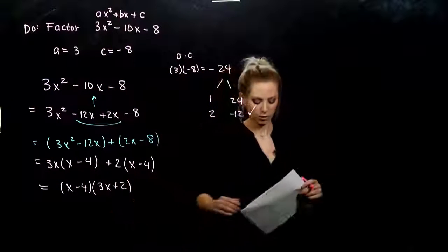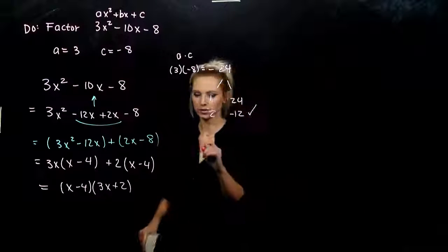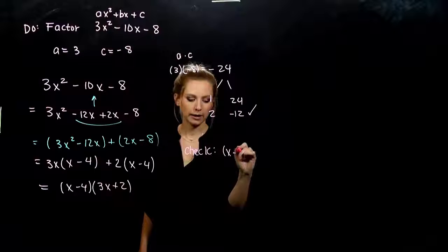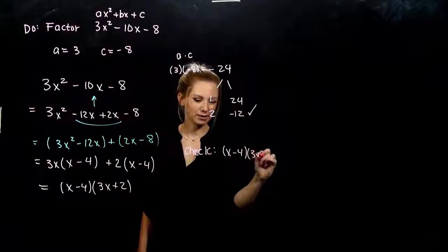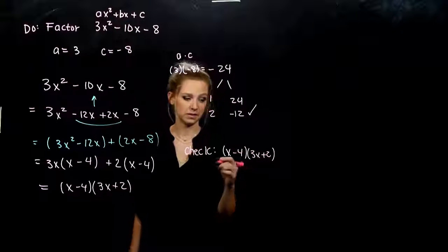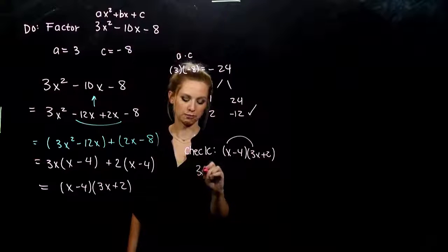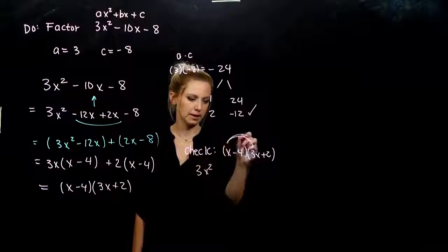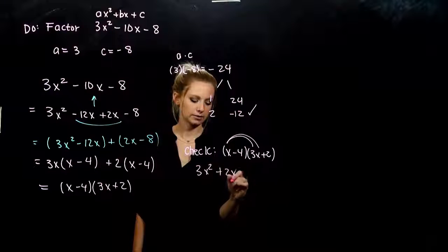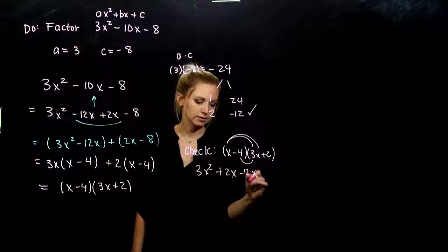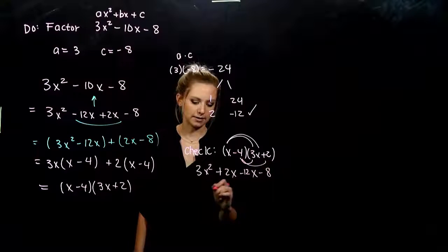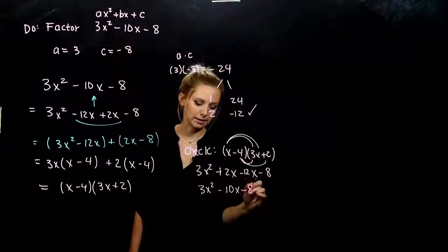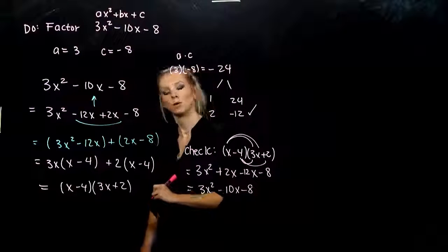Now it's a product. And we can check — we always want to with these kinds. If I actually multiply it out, do we get back to the original? So: first gives me 3x², outer plus 2x, inner minus 12x, last minus 8. So we're looking at 3x² minus 10x minus 8. Did we get there? We got there.